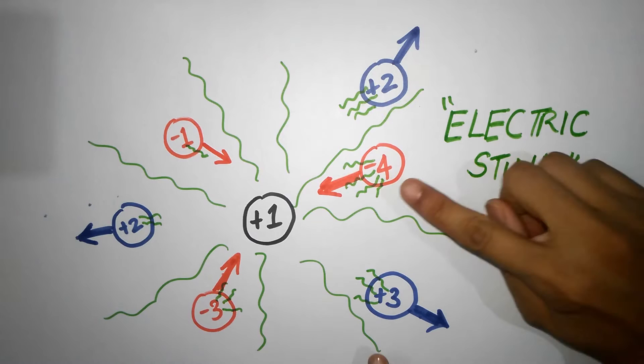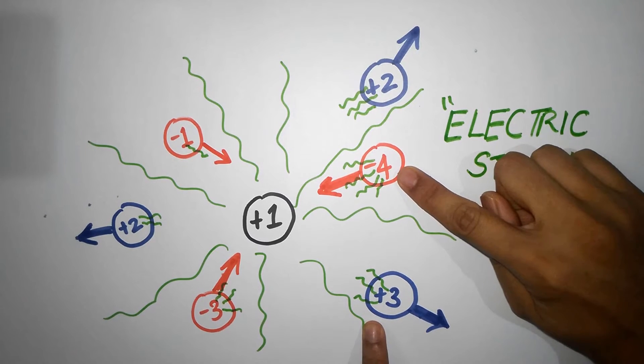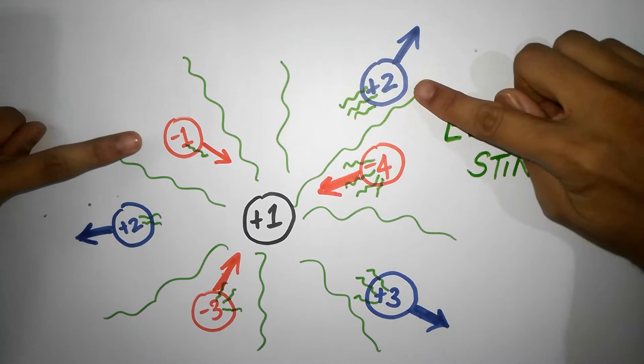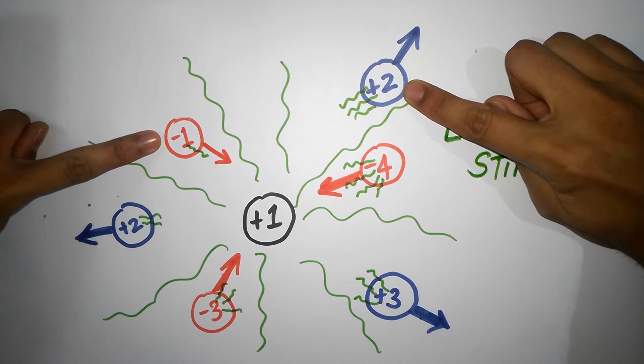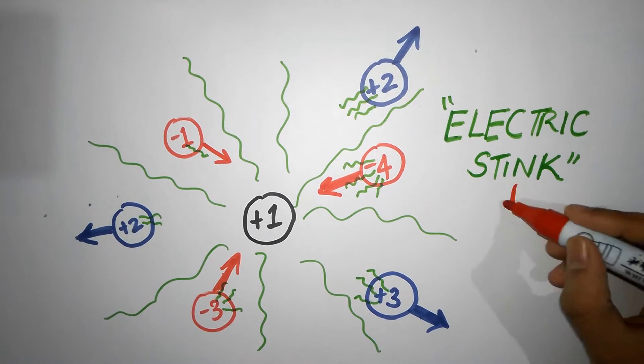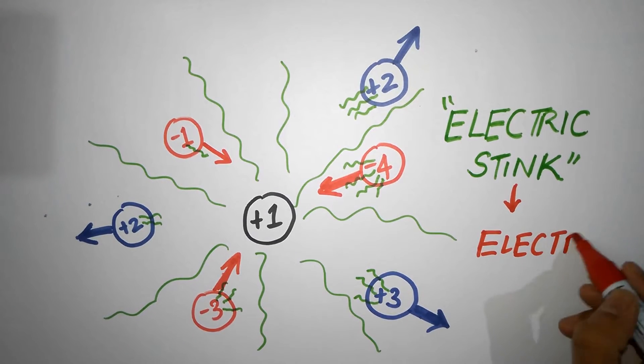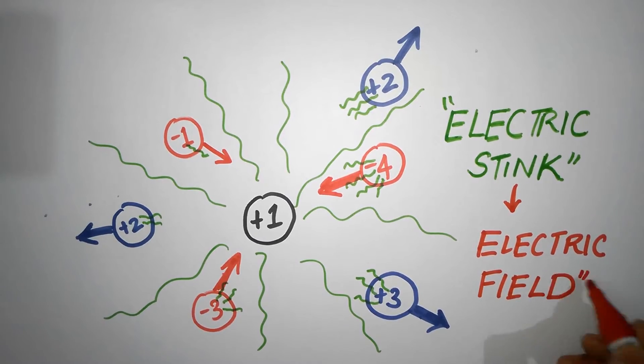Particles with more charge experience a stronger force, and the ones with less charge will experience a weaker force. This stink is what physicists like to call an electric field and make a big deal out of it. But now you understand that electric field is just stink that charges produce which influence other electric charges.